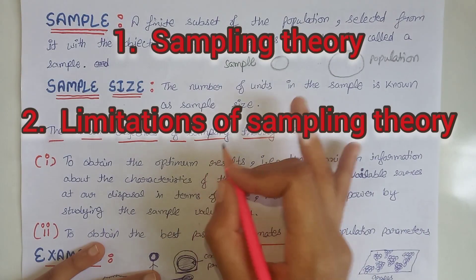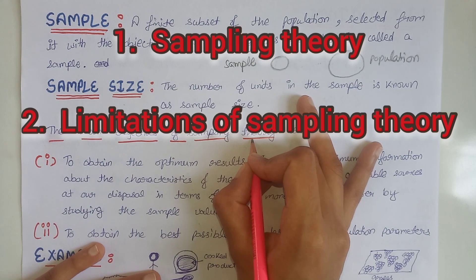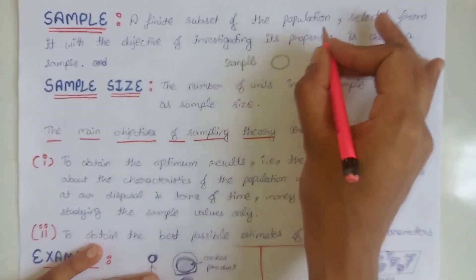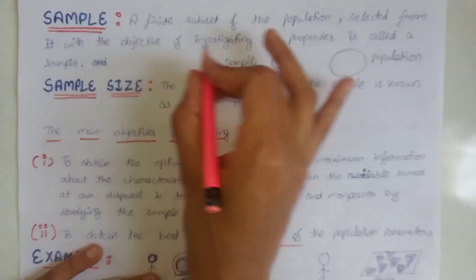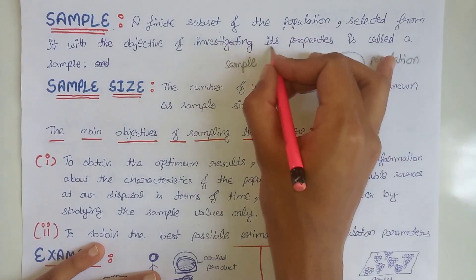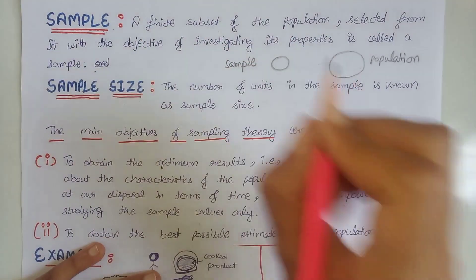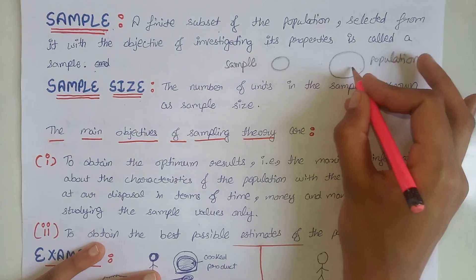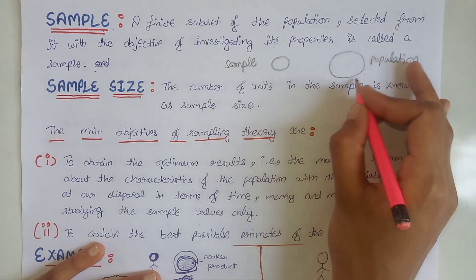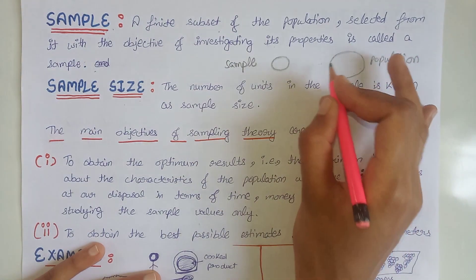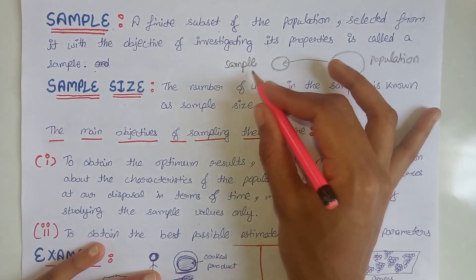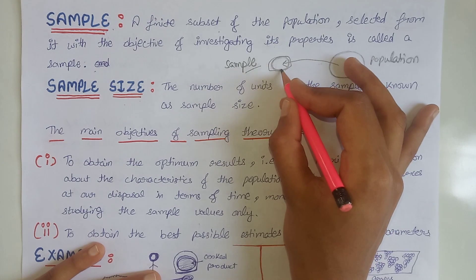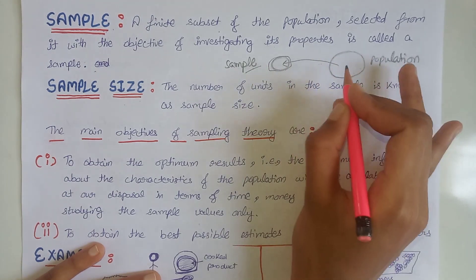In this video we will understand about the sampling theory and its limitations. First, let's see the definition of sample: a finite subset of the population selected from it with the objective of investigating its properties — that is, the properties of the population — is called a sample. Suppose we have a population and instead of investigating the whole population, we choose a subset called a sample, whose properties must be similar to those of the population.